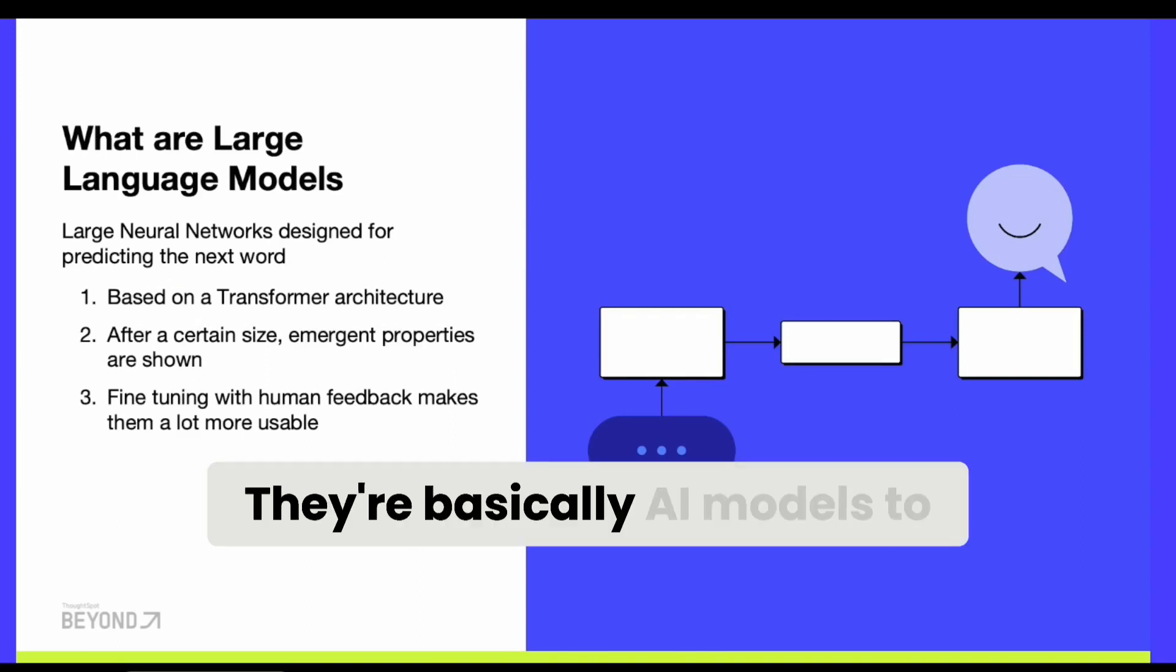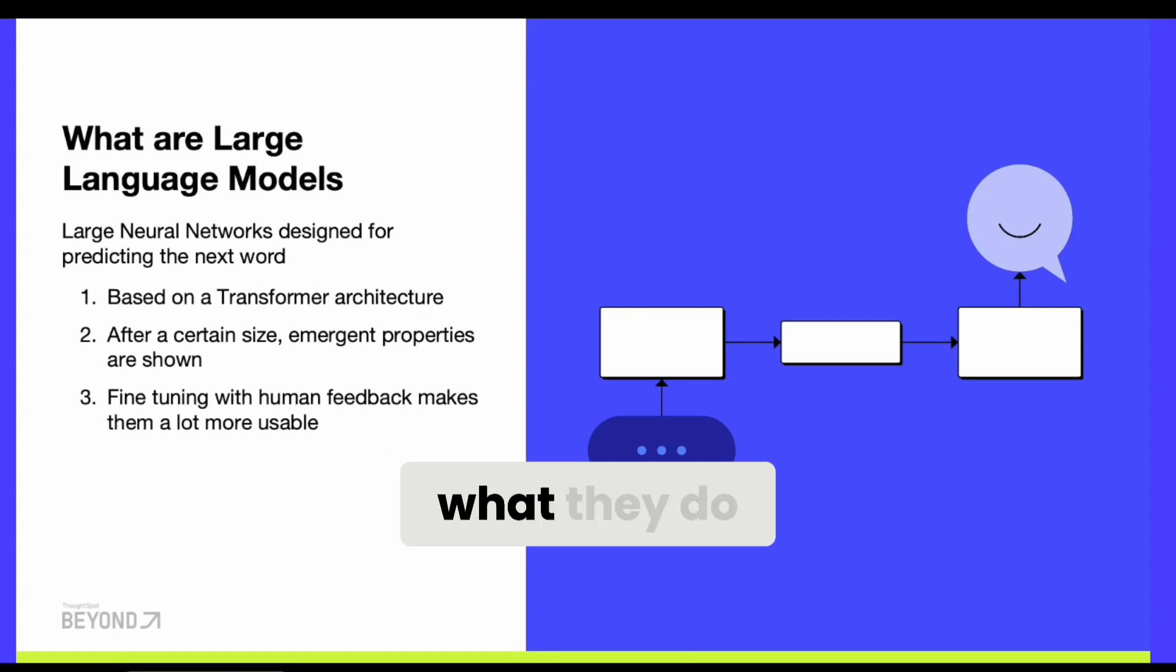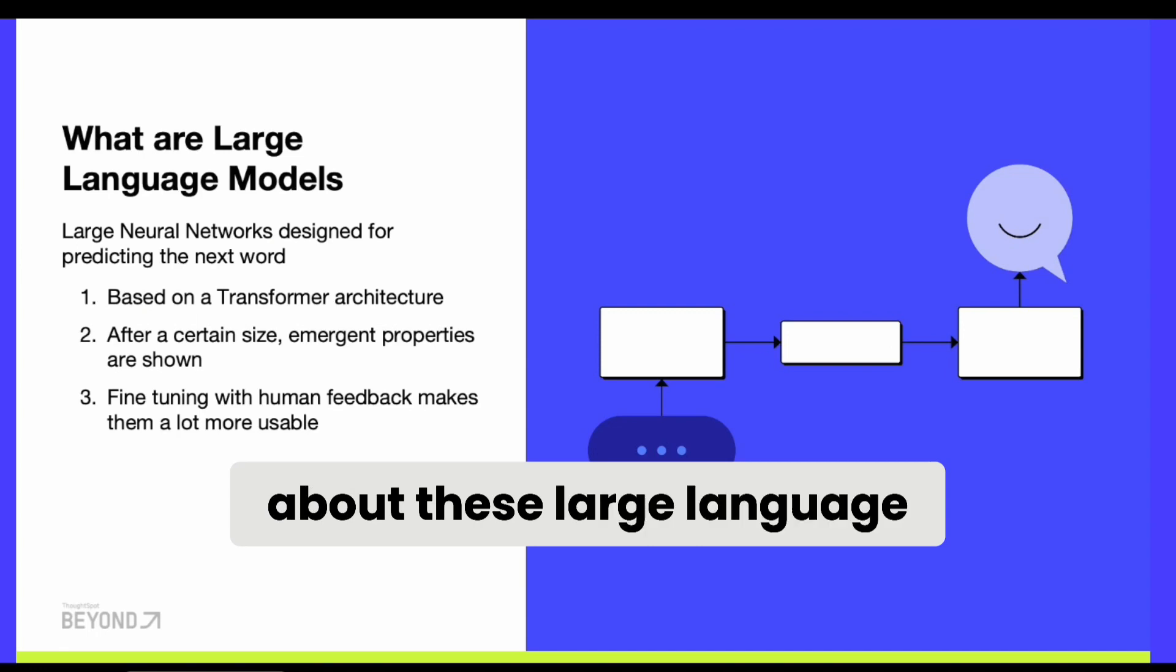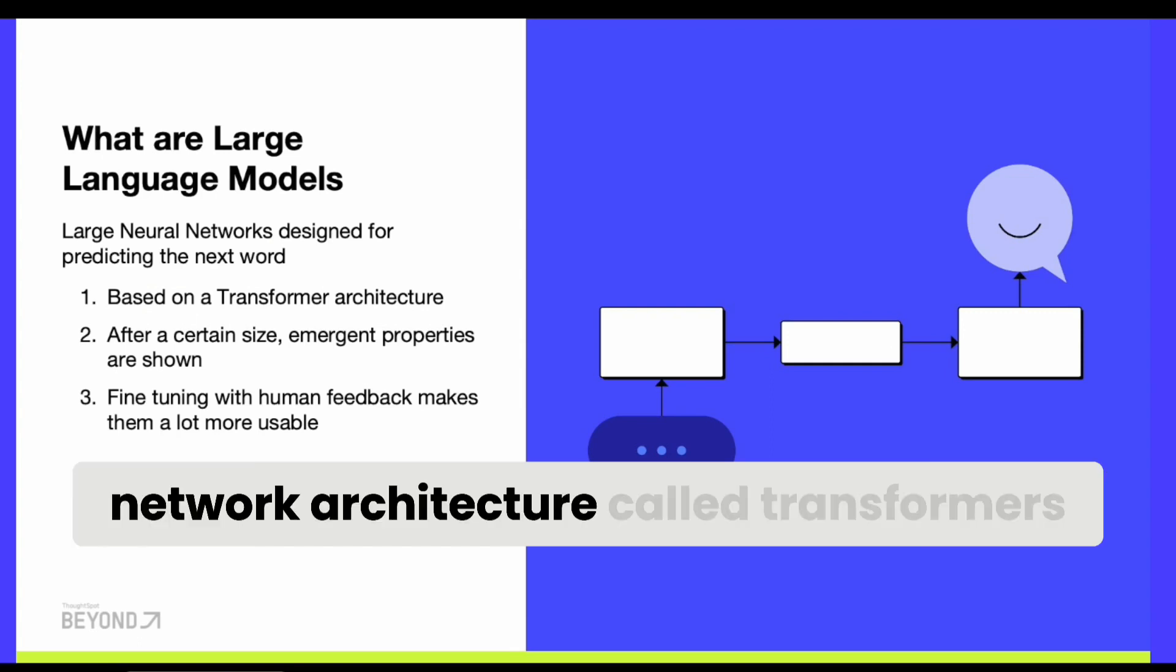What are large language models? They're basically AI models to predict the next word, but they're fairly large neural networks. Hundreds of billions of parameters are tuned in these networks to make them do what they do. What's also interesting is that they've all been trained using a relatively new neural network architecture